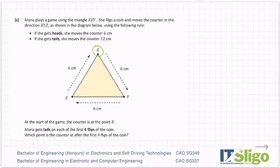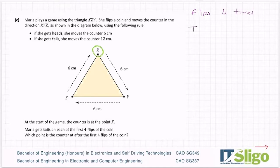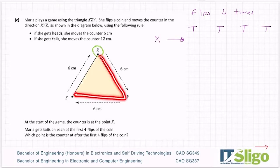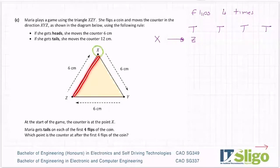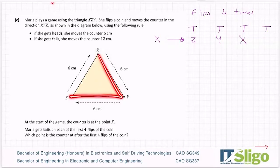Maria gets tails on each of the first four flips of the coin. So she flips four times — tails, tails, tails, tails. Starting at X, after the first flip I move two positions: X to Y to Z, so I'm at Z. Then I go Z to X to Y, so I'm at Y. Then I go Y to Z to X, so I'm back at X. Then I go X to Y to Z. So the counter is at Z.